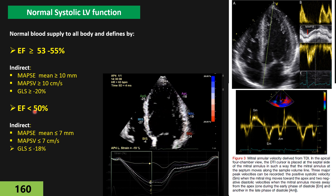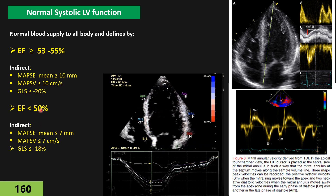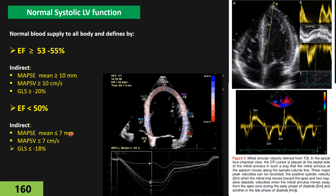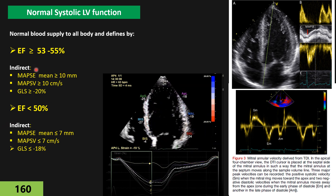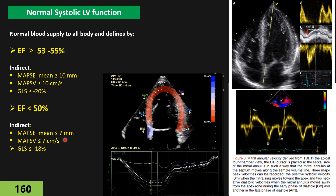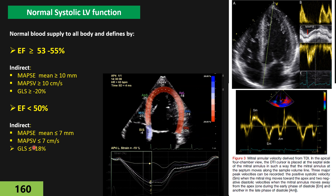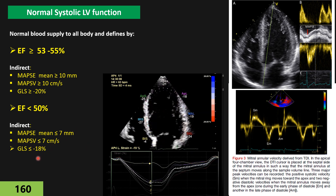When we have systolic dysfunction, ejection fraction goes below 50%. As mentioned, between 40–49% it goes to the mild category. In those cases, the indirect parameters show: mean MAPSE equal to or less than 5–7 mm, and MAPSV or tissue Doppler S-prime on the medial annulus equal to or less than 7 cm/s, or global longitudinal strain equal to or less than minus 18%.